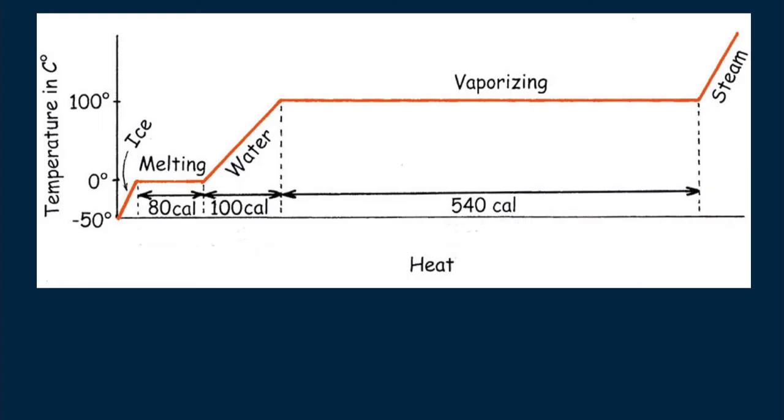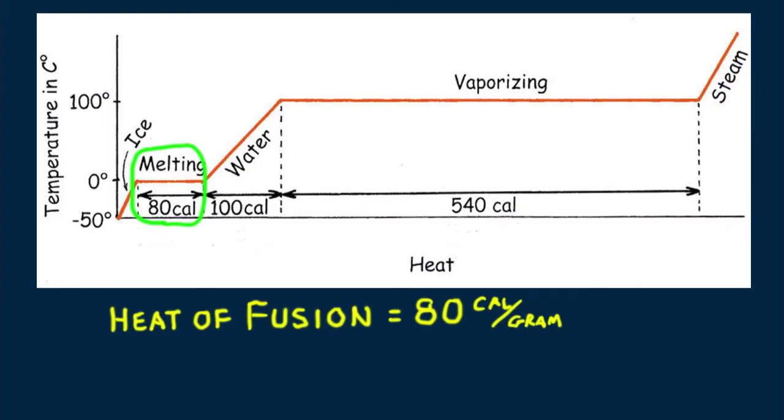If we continue applying heat, the temperature remains constant while the ice melts. When 80 calories of heat have been applied, all the ice turns to water. The ice has melted. This 80 calories per gram is the heat of fusion of water, the amount of heat needed to separate molecules from the solid phase to the liquid phase.